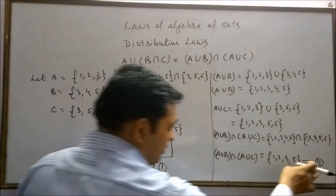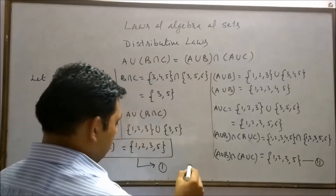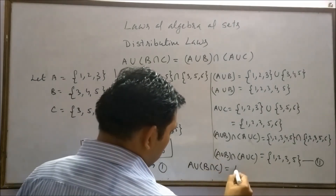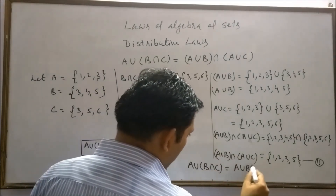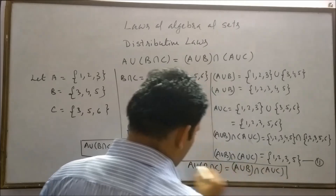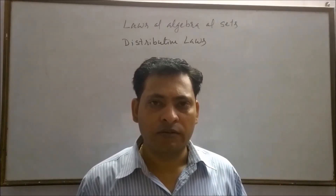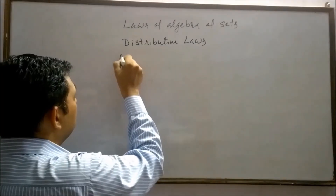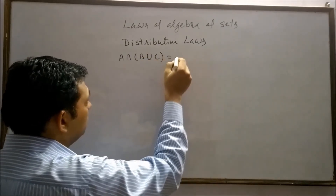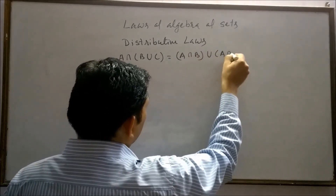The first and second results are the same, so we conclude that A union (B intersection C) = (A union B) intersection (A union C). Now I am going to discuss the distributive property of intersection over union: A intersection (B union C) = (A intersection B) union (A intersection C).